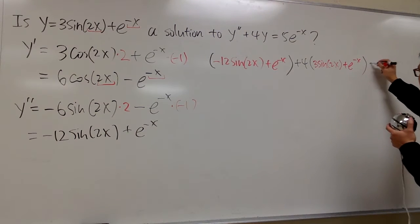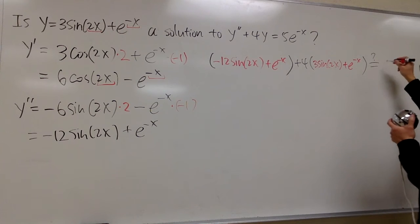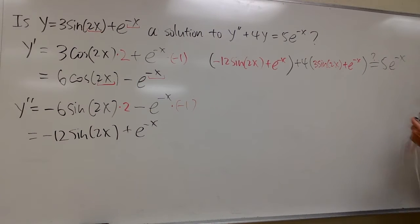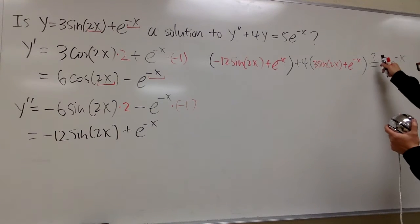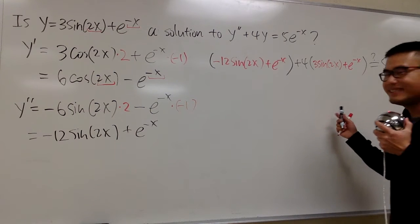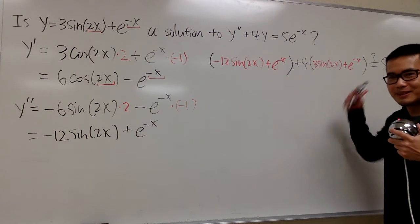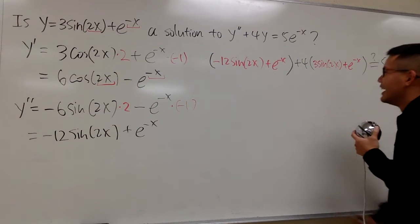At the end, we'll end up with 5 e to the negative x. I don't know yet, because I haven't done anything yet. So that's why I put down a question mark. Anyways, right here, let's see.